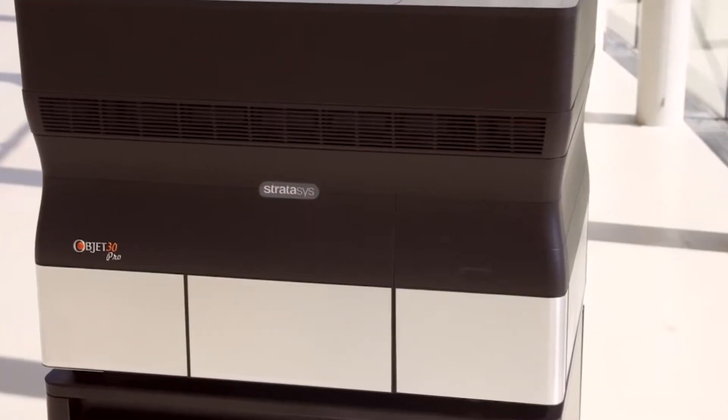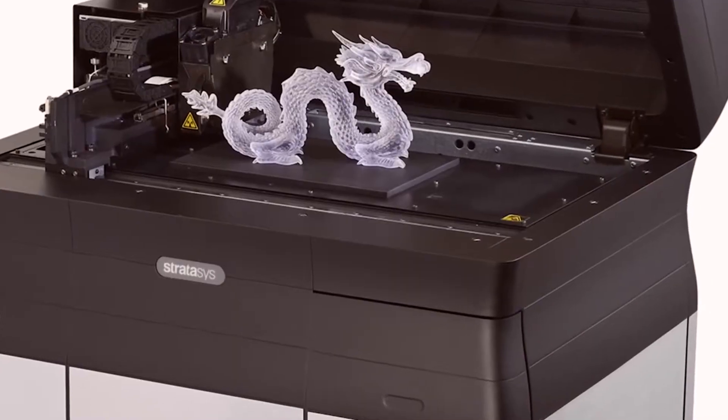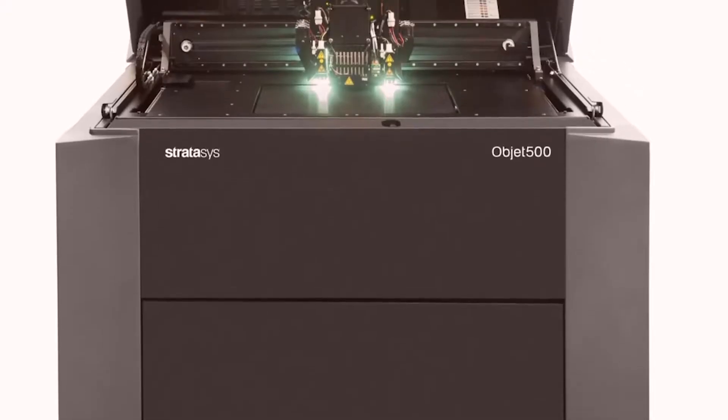Rigger is jetted as a single material that works in high quality, high speed and digital material modes and it runs on almost all PolyJet systems, from the desktop OBJET30 Pro and Prime to all Eden V systems and the entire Connex family.